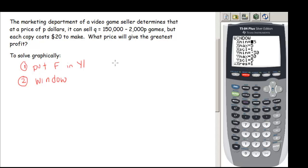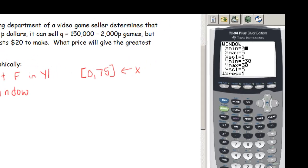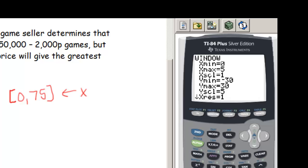So remember, our function we're trying to maximize on the interval 0 to 75. So this is going to give me the X values of our window. So we're going to go from 0 up to 75, and an X scale of, say, 5 would be good.